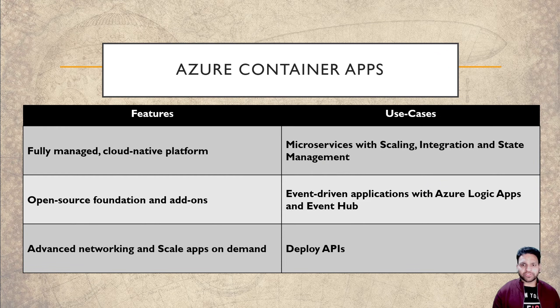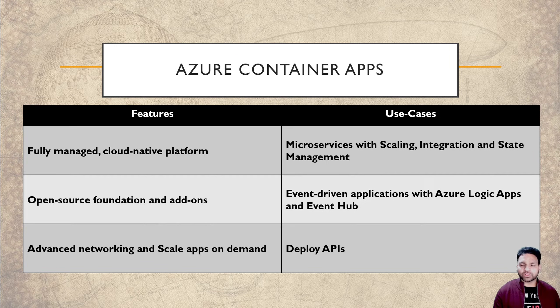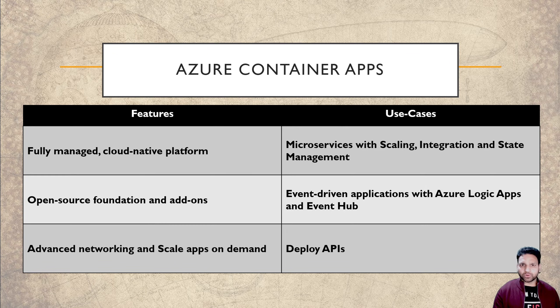ACA is also very well suited for deploying APIs. If there are a lot of hits on the API, then automatically scaling will happen and more containers will spin up to handle the load.